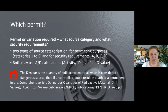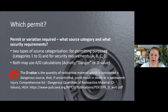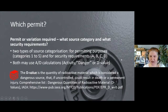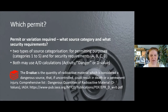Source categorisation for permitting purposes or security requirements is done using an A/D calculation. The category 1 equates to security requirement A, category 2 is B, categories 3 and 4 are lumped together as security requirement C, and category 5 as D. The D value — as far as I can tell, it stands for danger value — and there is a full comprehensive list on the IAEA website, which also covers background on it and would be my go-to document for more information on D values.